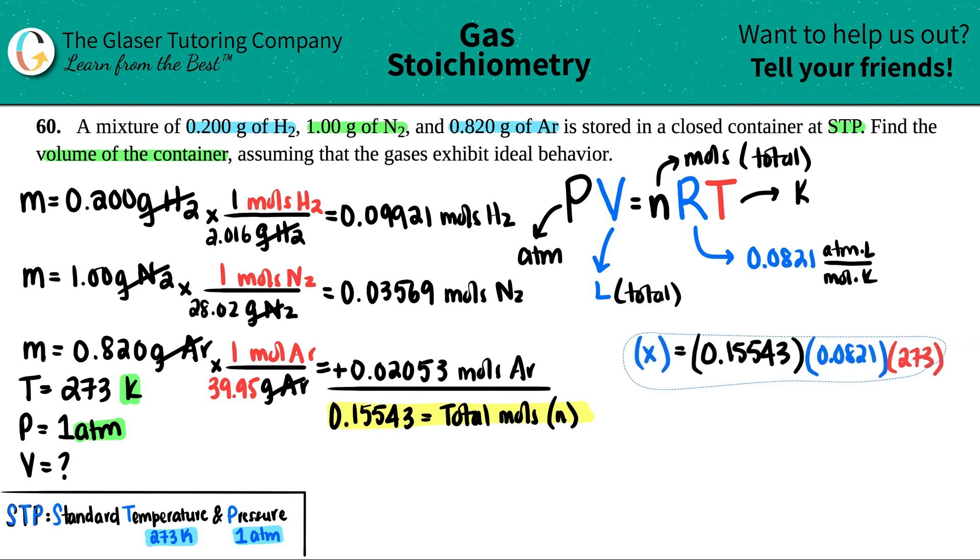And now we have x equals... now we're going to round. So 0.15543 times 0.0821 times 273, and looks like 3 sig figs we're giving in the problem, so 3 sig figs back: 3.48, and that is in liters. And that is the total volume of the whole container because you took the total moles. That's it!